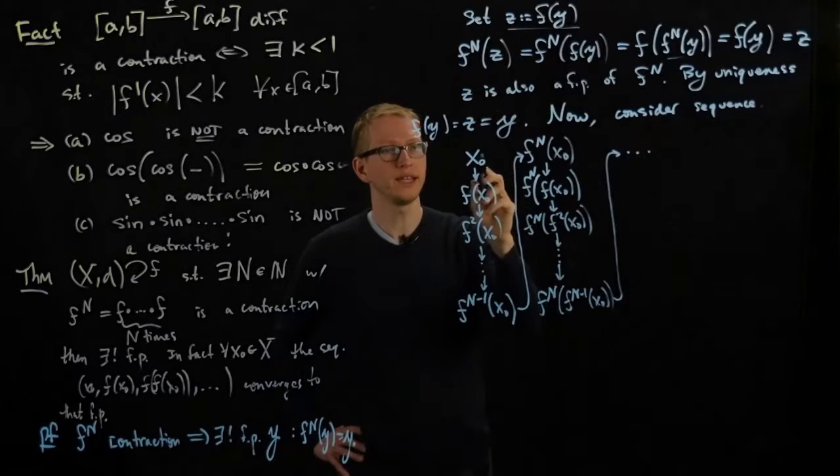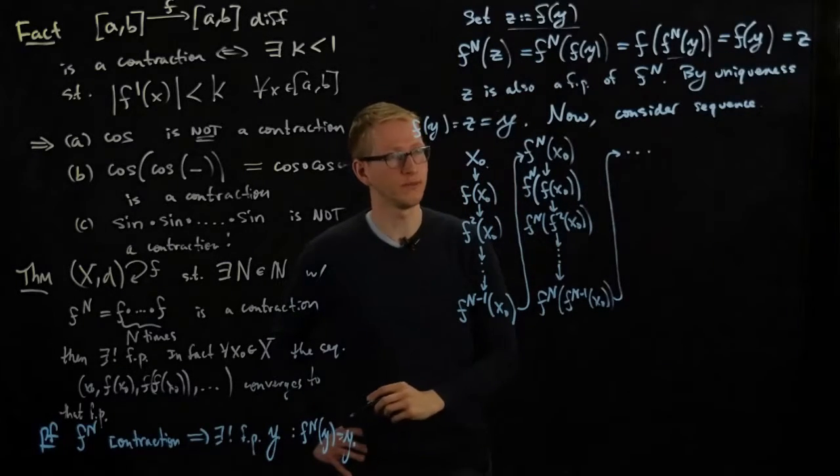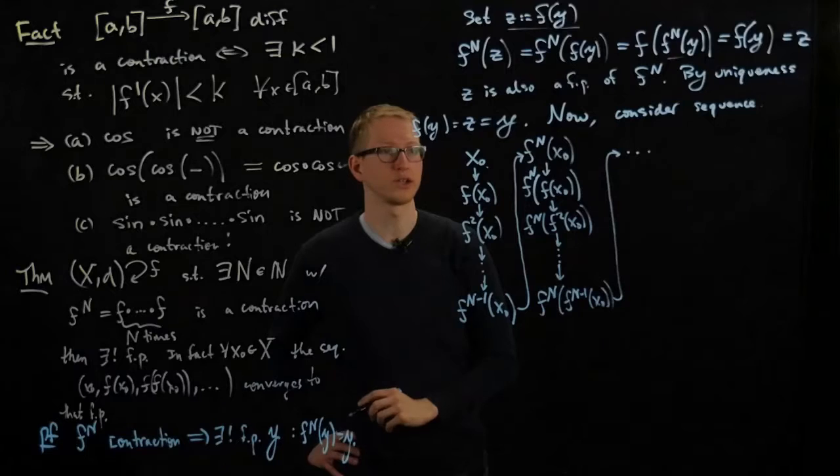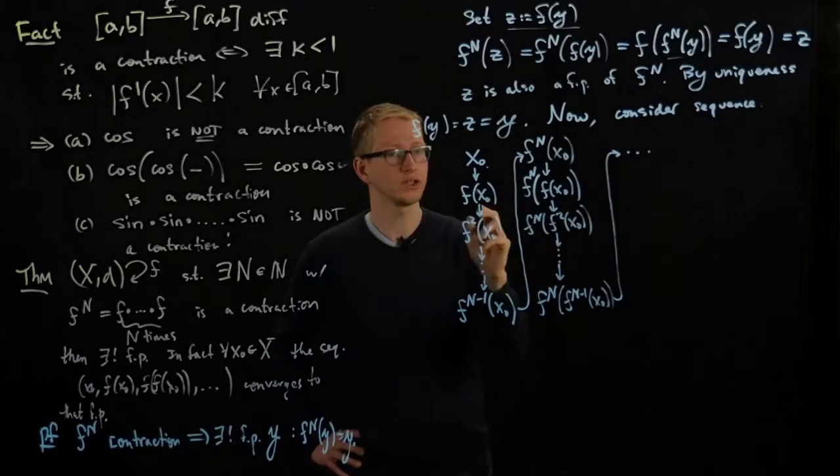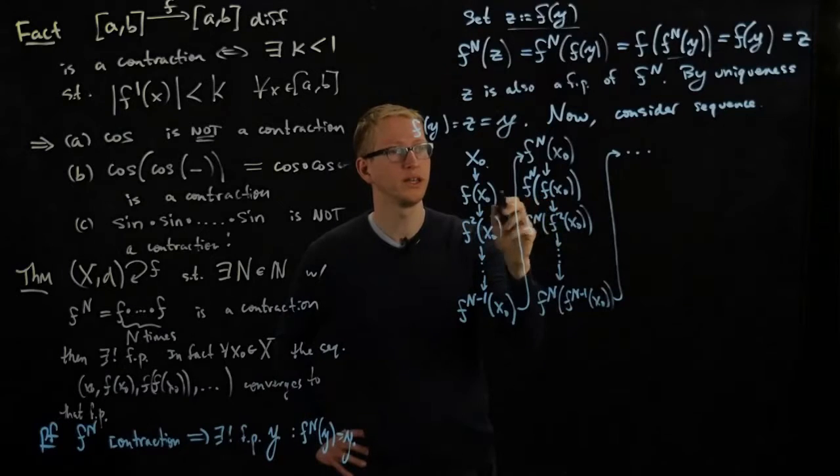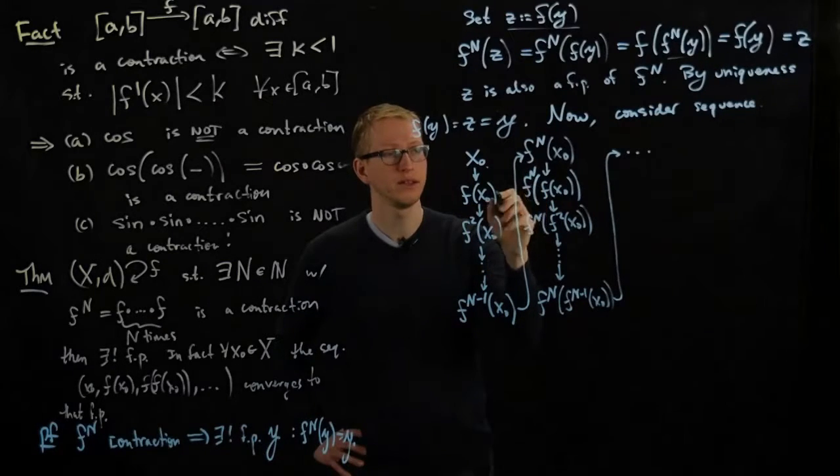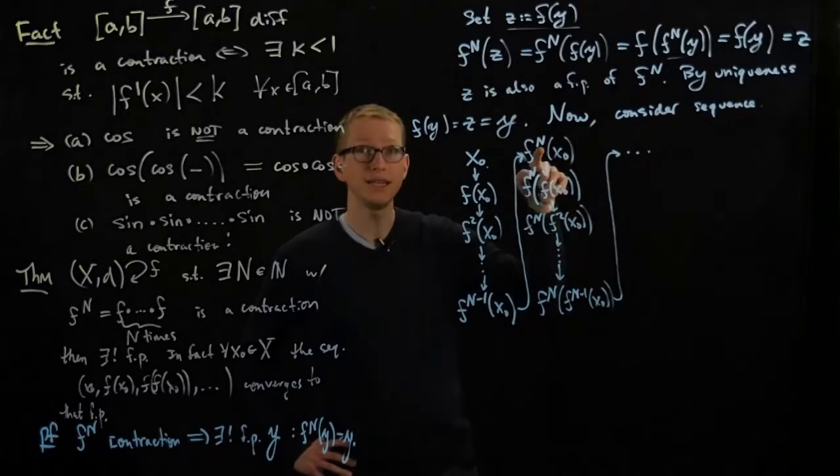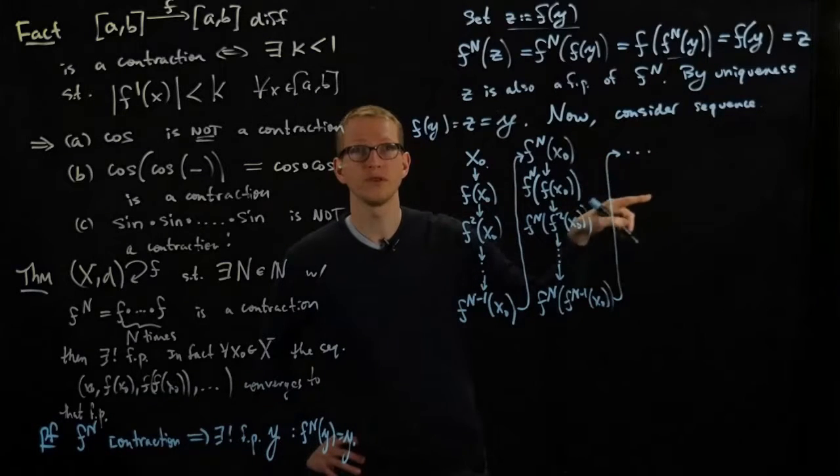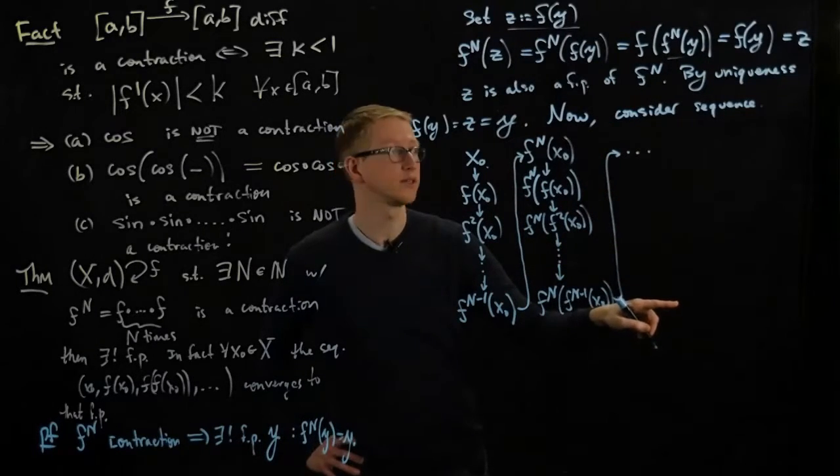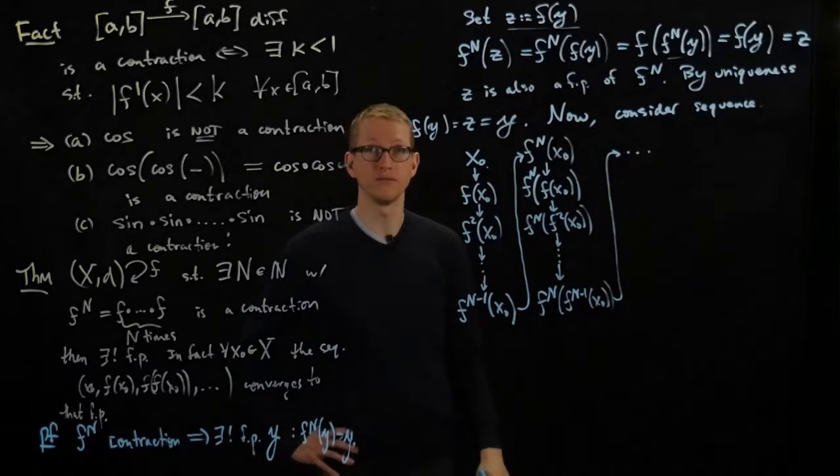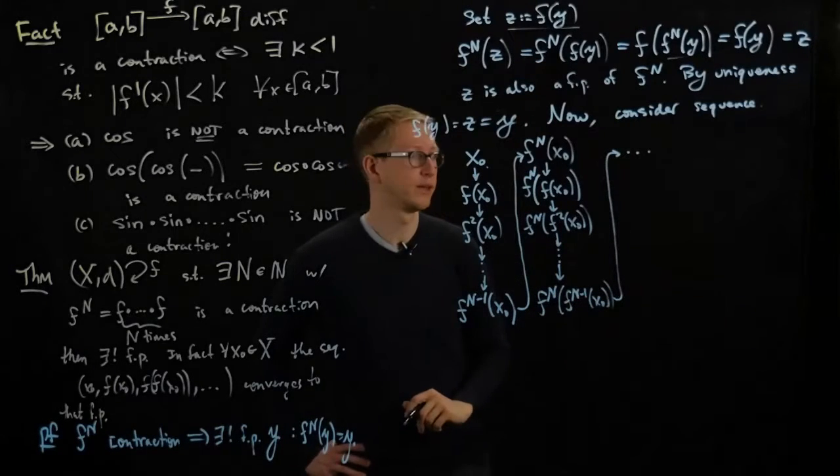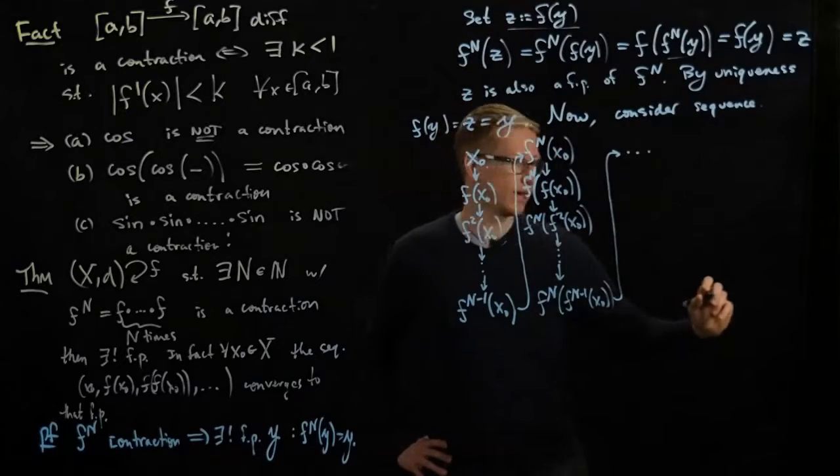And what you notice is that so this is our entire sequence, and we know that each of the horizontal subsequences of this entire sequence converges by the previous theorem because f n is a contraction. Again here, f n is a contraction, so think of this point here as being x1 and you're just applying f n iteratively to x1, and that also converges to the fixed point. And by uniqueness of that previous theorem, all of those fixed points in these horizontal subsequences converge to the same unique fixed point, and therefore this entire sequence converges to that same fixed point. And that's actually the end of the proof.